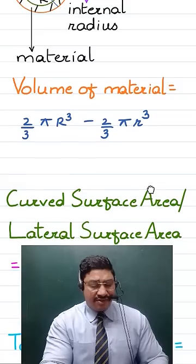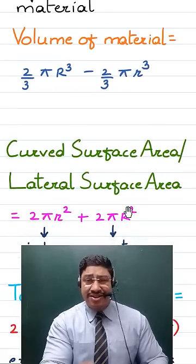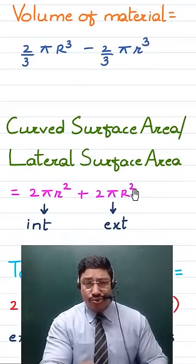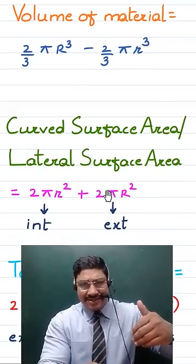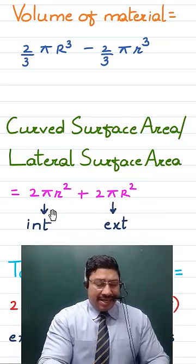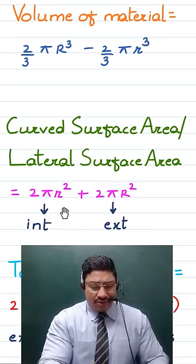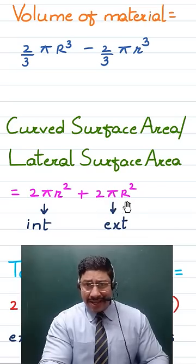Further, to find out the curved surface area, which is also known as the lateral surface area, there are two in number: one is the internal and the second is the external. The internal is 2 pi small r square and the external is 2 pi capital R square.